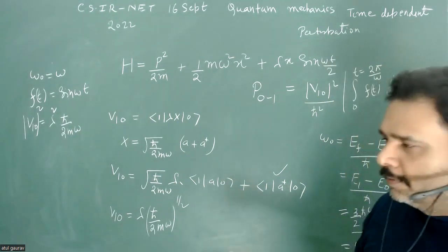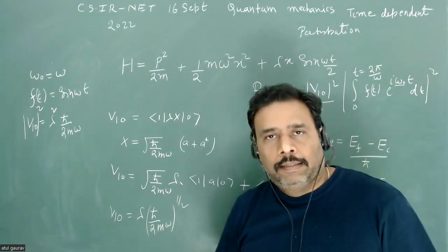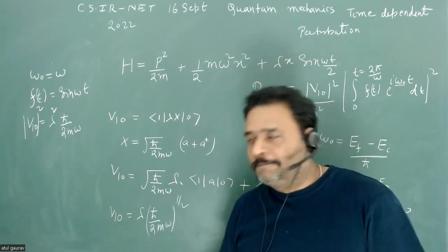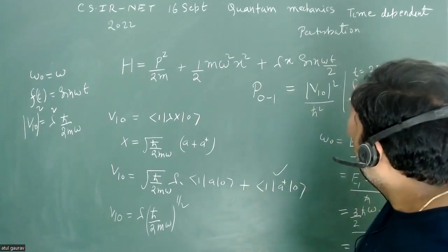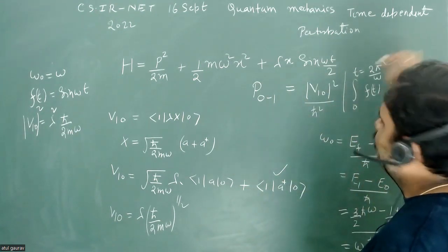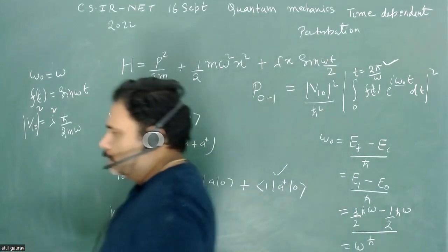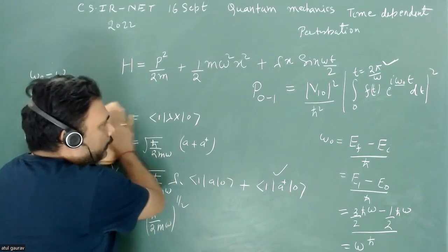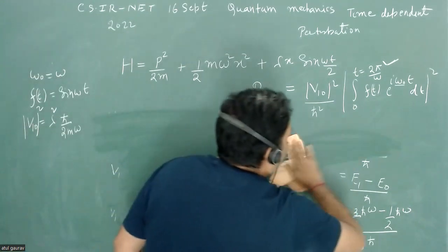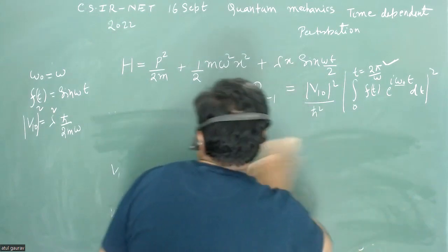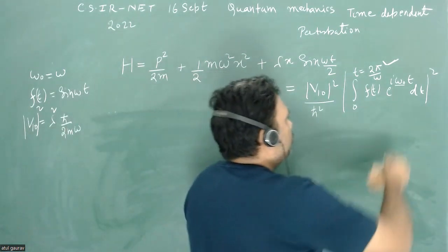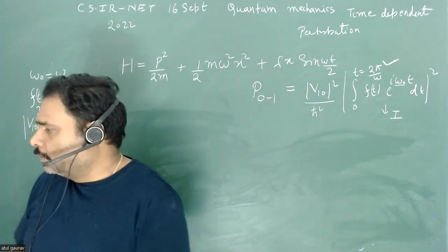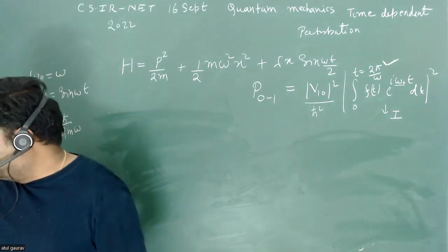Step by step — this is a long, 5-mark question so we must be careful with all calculations. Now let's go for the second calculation: evaluating the time integral I = ∫₀^(2π/ω) F(t) e^(iω₀t) dt.